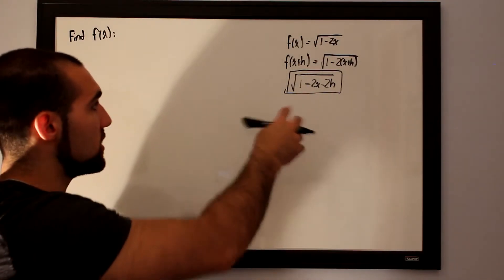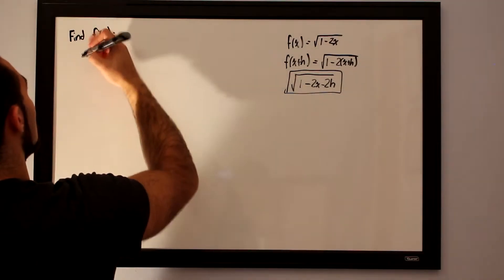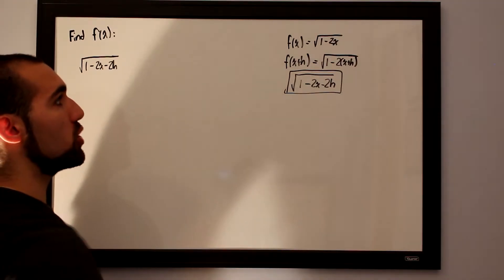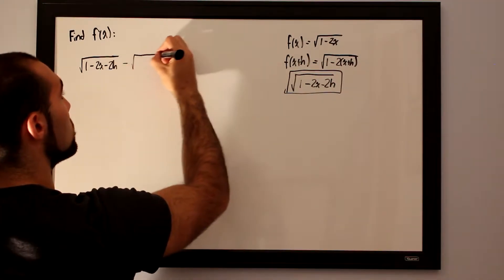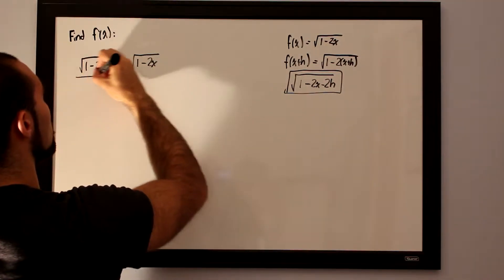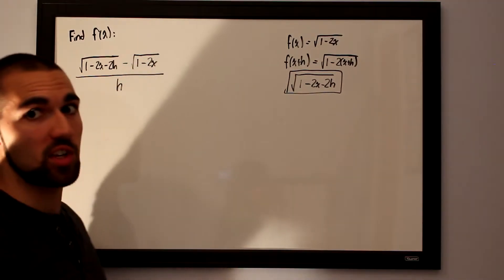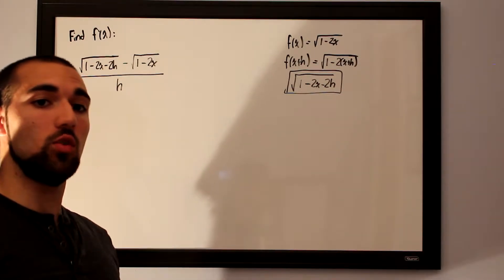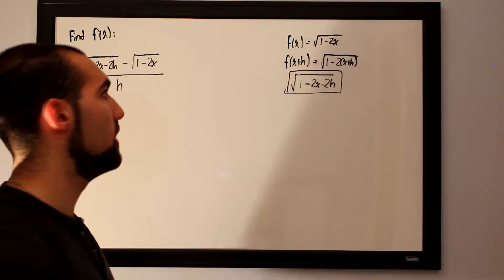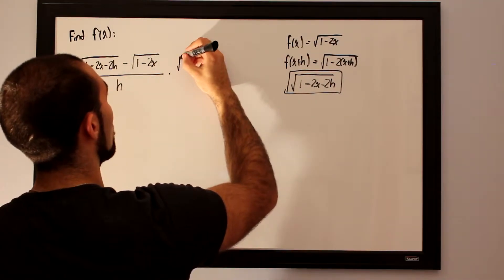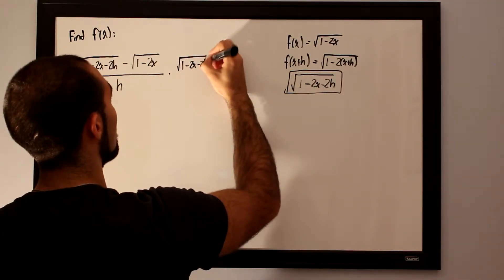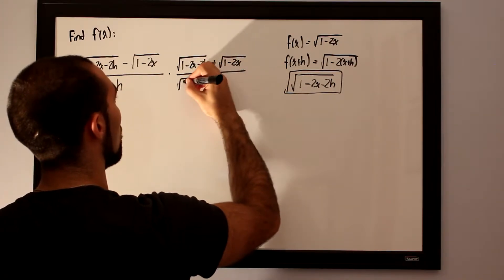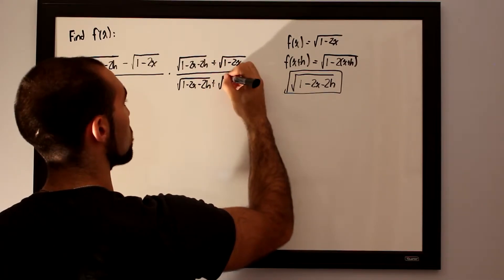We substitute into our formula: take f of x plus h, which is the square root of 1 minus 2x minus 2h, subtract our initial function, the square root of 1 minus 2x, all over h. Because we can't cancel common factors right away, we multiply by the conjugate: the square root of 1 minus 2x minus 2h plus the square root of 1 minus 2x, over that same expression.